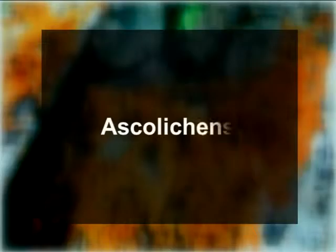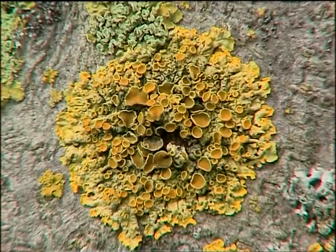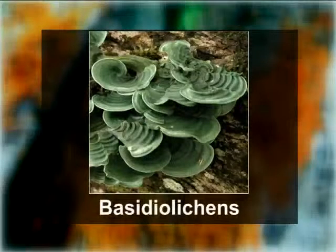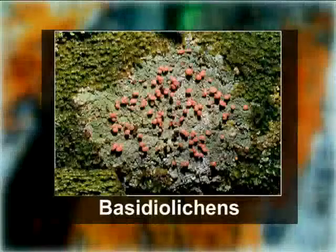The first class is Ascolichens, where the fungal partner composing the lichen is an Ascomycotina. The second class is Basidiolichens, in which the fungal partner belongs to Basidiomycotina. Alexopolis and Mims divided lichens into three groups: first, Ascolichens (fungal partner is Ascomycotina); second, Basidiolichens (fungal partner is from Basidiomycotina); and third, Deuterolichens, which are lichens that do not produce spores.